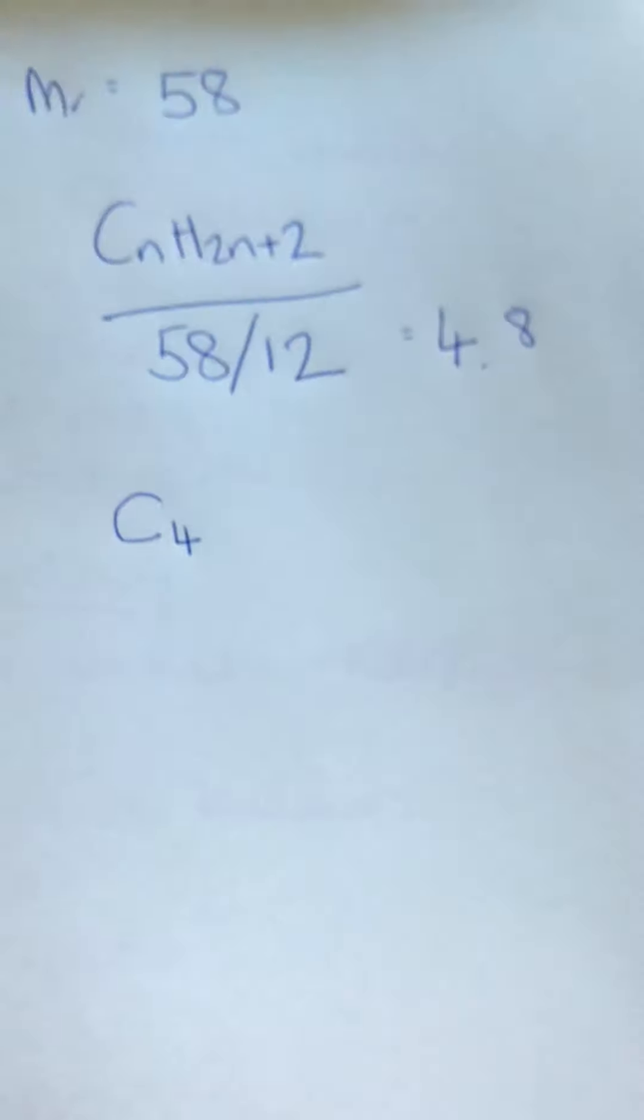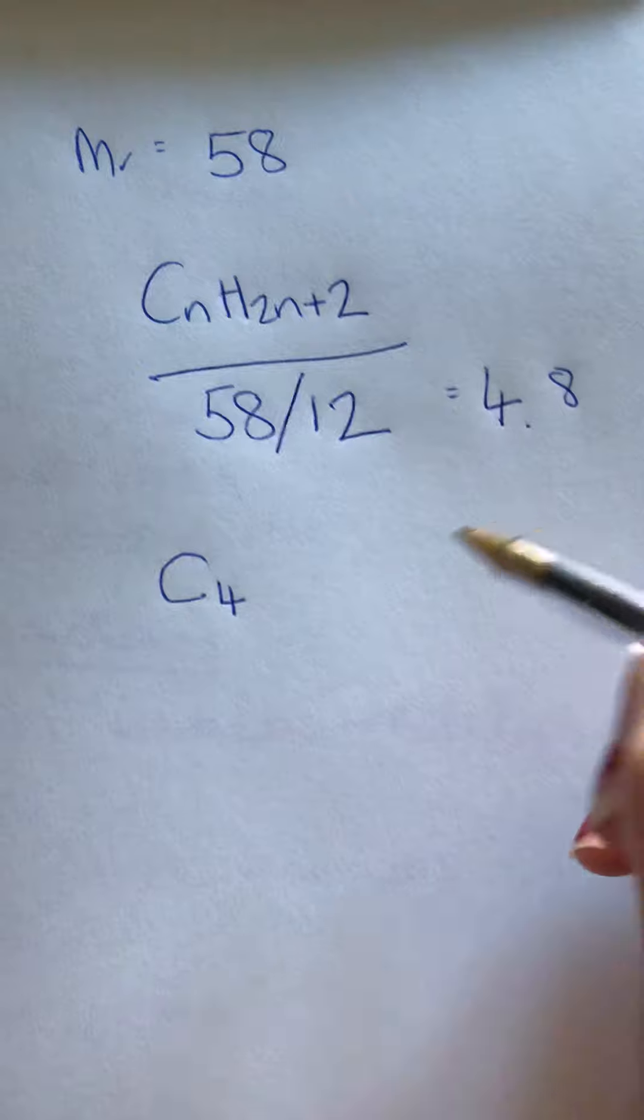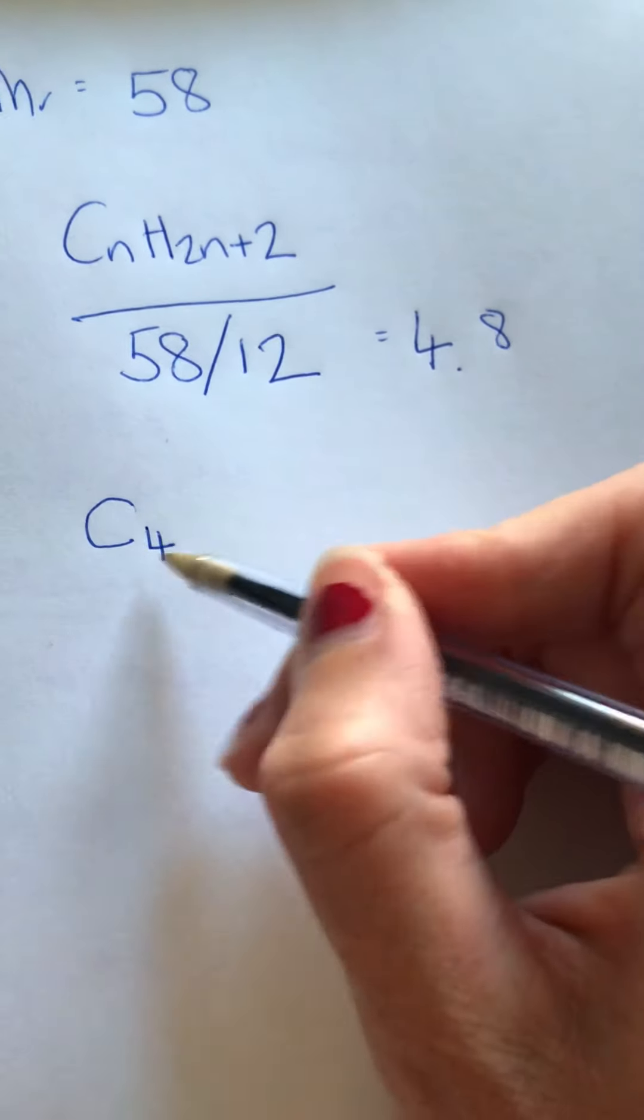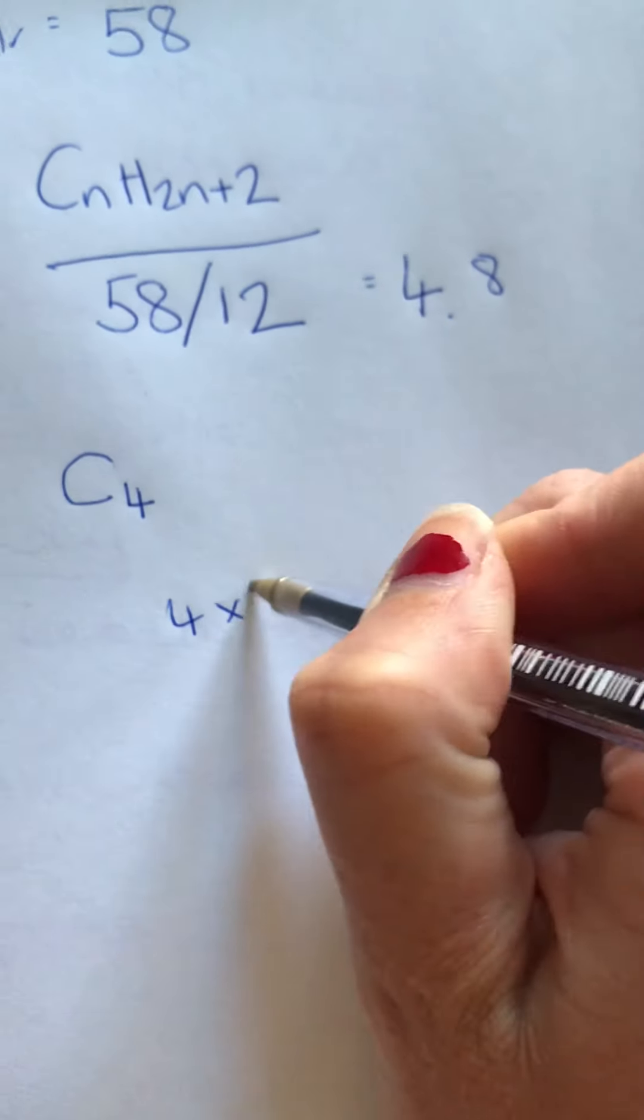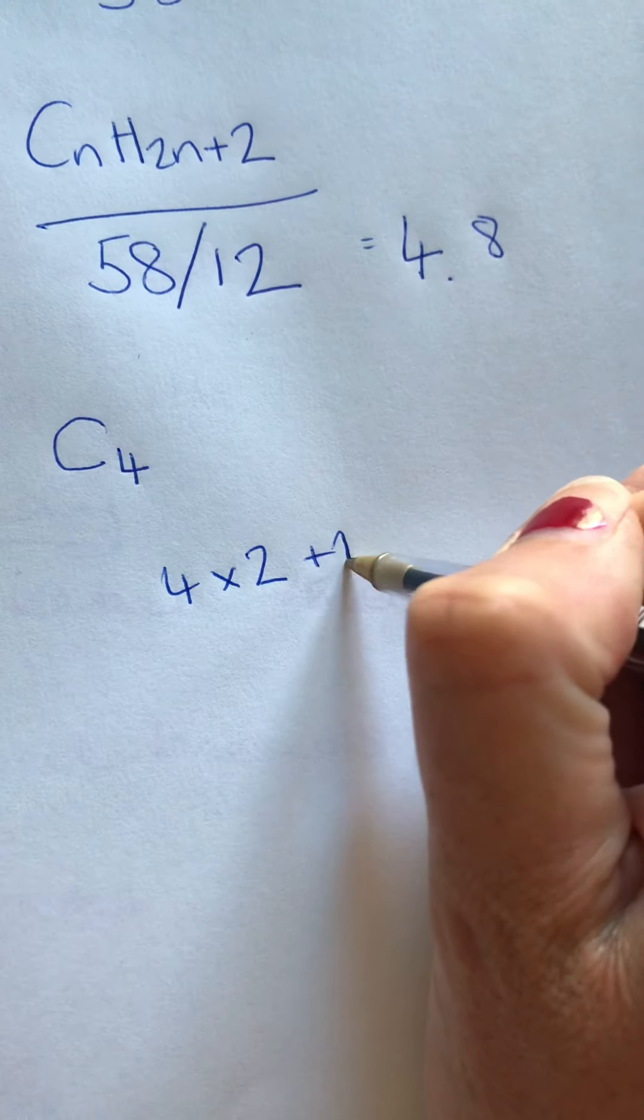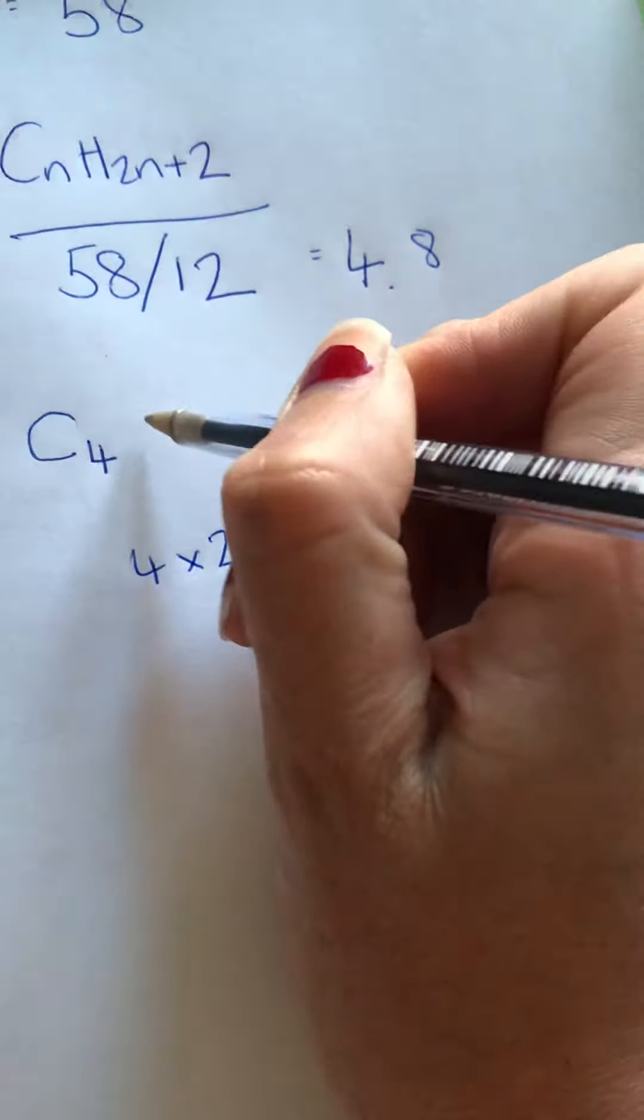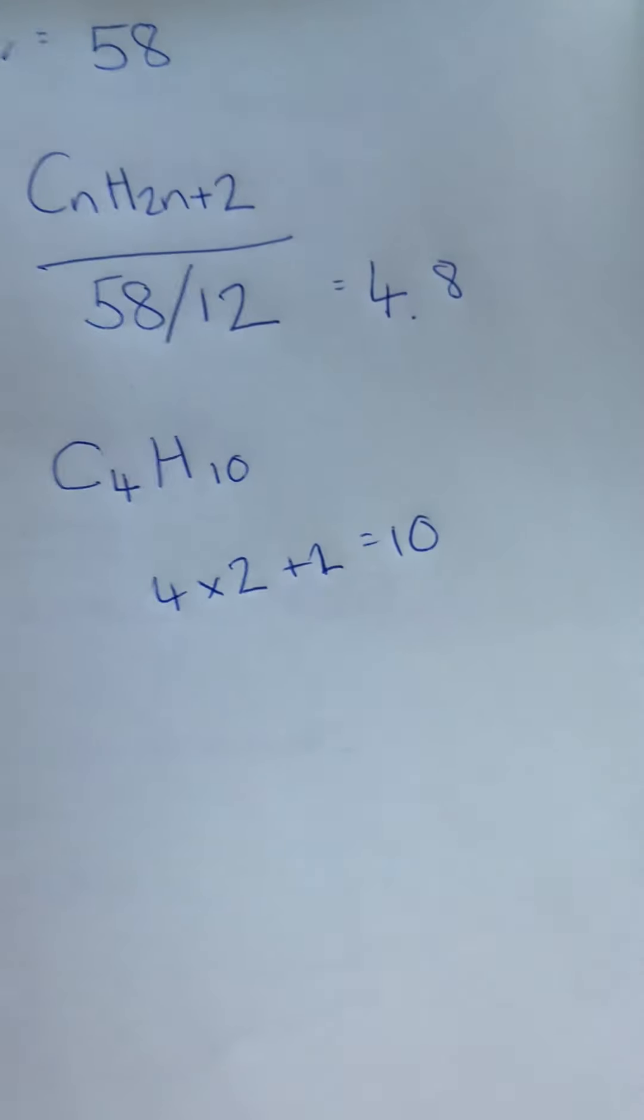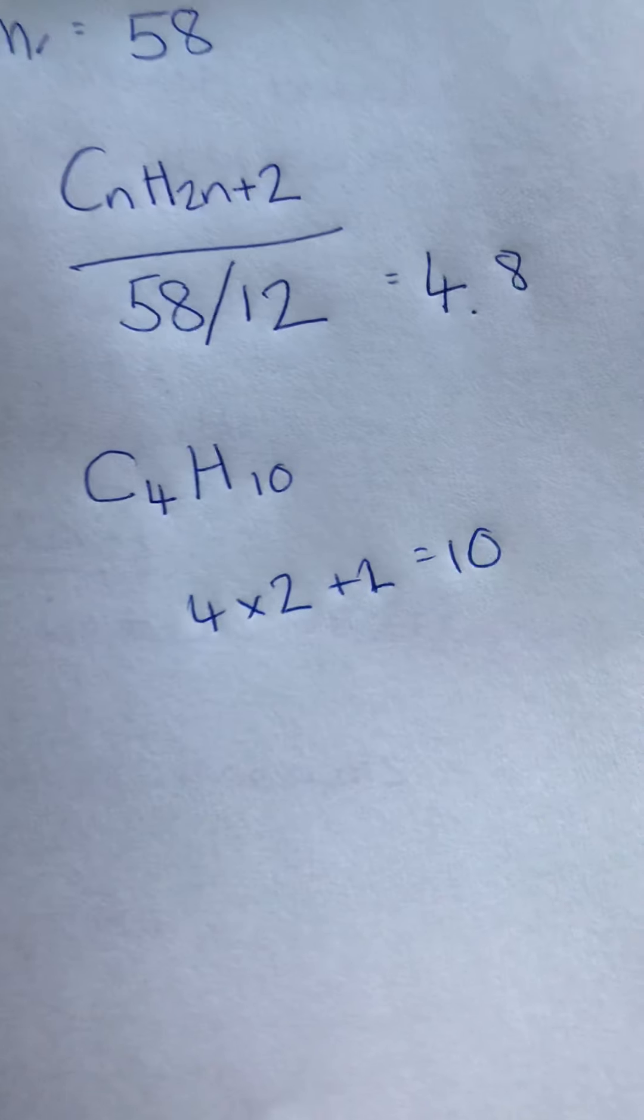Now a couple of ways you could do this. You could say, well, using my general formula CnH2n+2, the formula is going to be 4 times 2 plus 2, which equals 10. So the formula would be C4H10, and that works - that is the formula of an alkane.